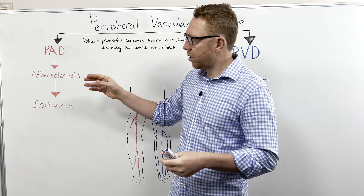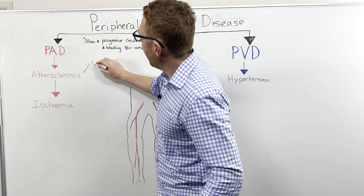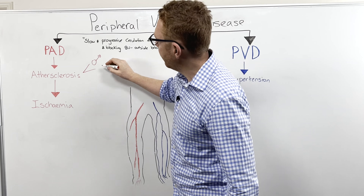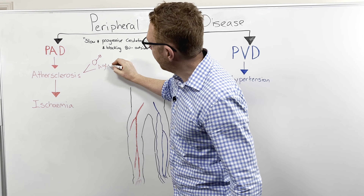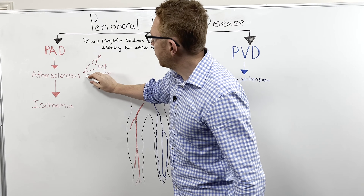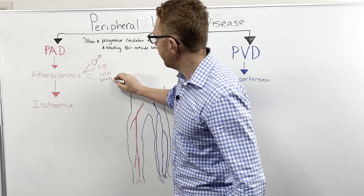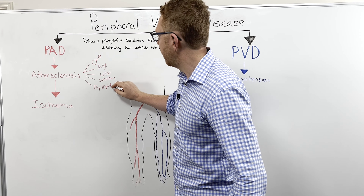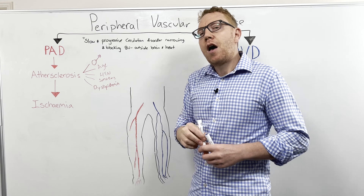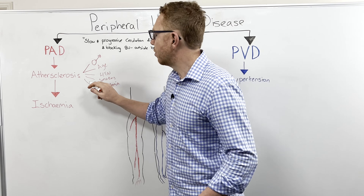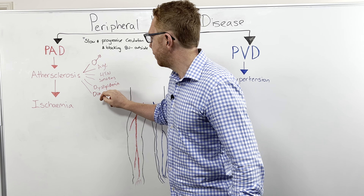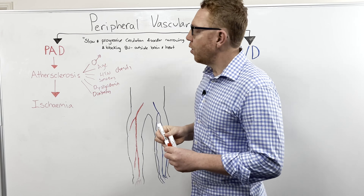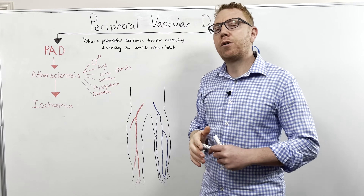What are the risk factors associated with atherosclerosis? Male sex is a big risk — females post-menopause will catch up, but males have a higher baseline risk. Increasing age, hypertension, and smoking are significant. Dyslipidemia — meaning a high amount of bad fats and a low amount of good cholesterol in the blood — and also diabetes and obesity are additional risk factors that increase the likelihood of atherosclerosis.